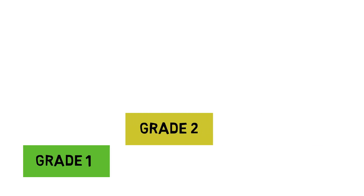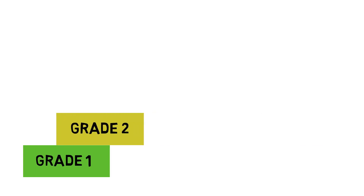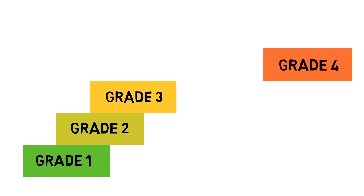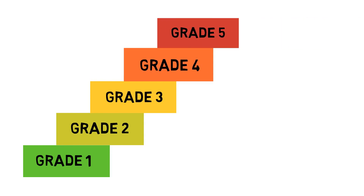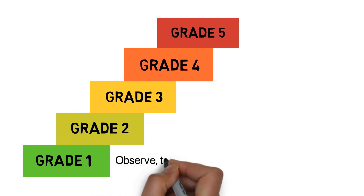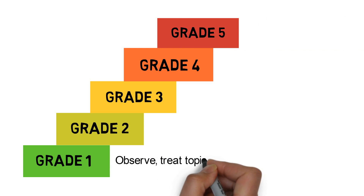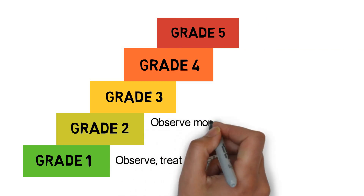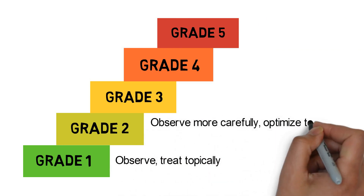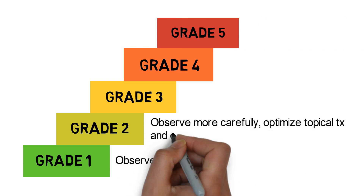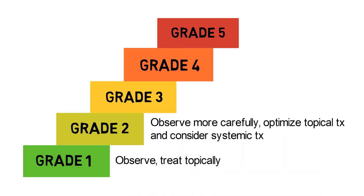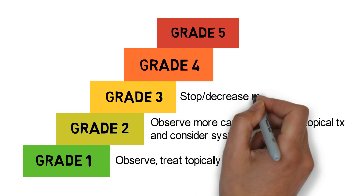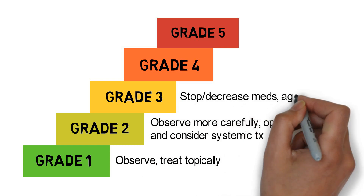This grading system provides a stepwise approach to managing the patient. While specific toxicities may be managed differently, generally for grade 1, we observe and treat topically. For grade 2, we observe more carefully, optimize topical treatment, and consider systemic treatment. For grade 3, we stop or decrease medication and provide more aggressive treatment.